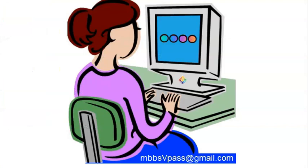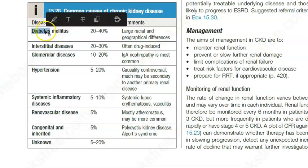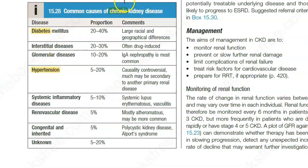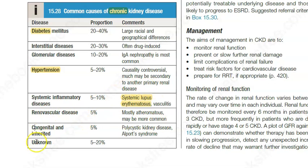For chronic kidney disease, it is an irreversible deterioration of renal function that develops over a period of years — unlike acute which is reversible. Chronic kidney disease happens because of diabetes, interstitial disease, glomerular disease, hypertension, systemic inflammatory diseases like systemic lupus erythematosus (SLE), and congenital or renal vascular disease. So basically diabetes and hypertension lead to chronic kidney disease, and SLE as well.